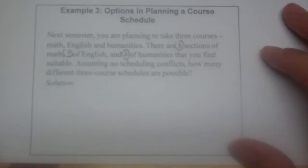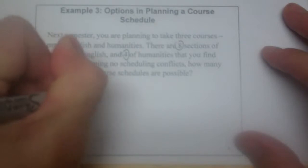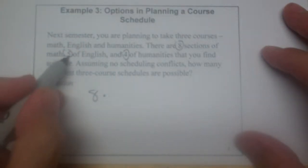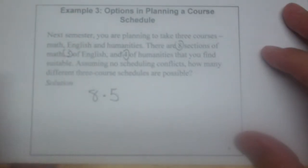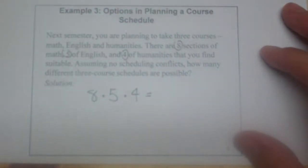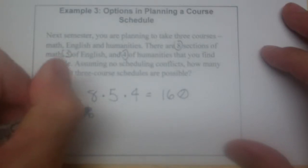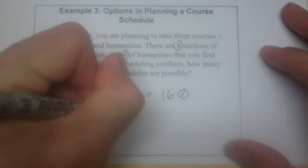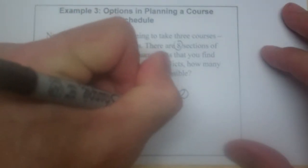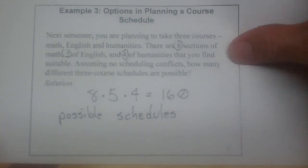Well, what do you think you would do here? Well, if we had two items, we'd multiply them together. If we have three items, we're going to multiply those together. So I'm going to take one course out of the eight, I'm going to take one course out of the five, I'm going to take one course out of the four. And I'm going to end up by multiplying those together with one hundred and sixty possible schedules. That's quite a bit, so hopefully you find something that works for you.